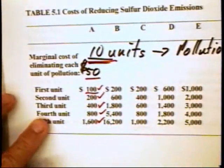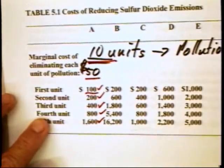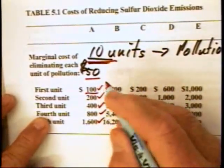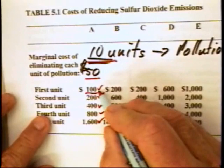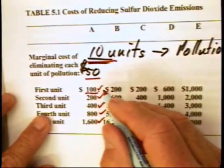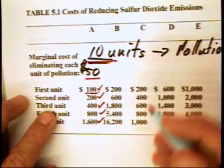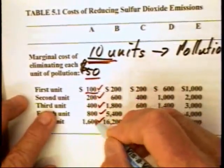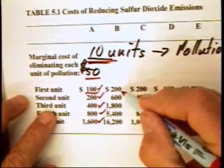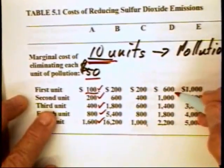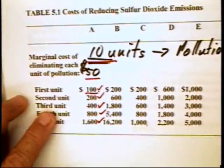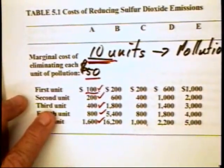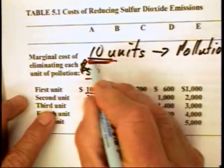We can test other prices — for example, $101. At $101, firm A would prefer to clean up one unit of pollution rather than pay $1 more for the certificate, so firm A would demand 4 tickets. Firm B would demand 5, C 5, D 5, E 5 — there would be 24 tickets being demanded. The price will continue to rise until the quantity of pollution rights demanded equals the 10 that are available.